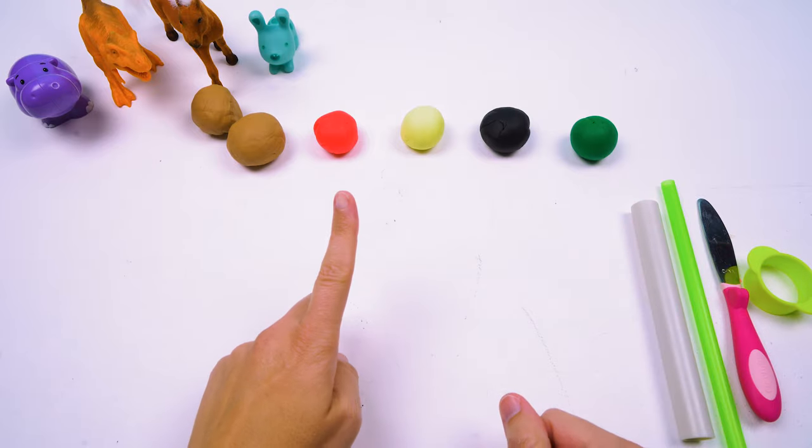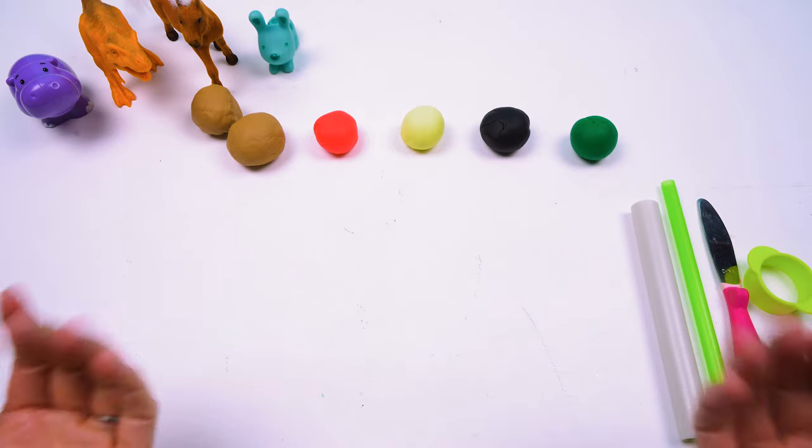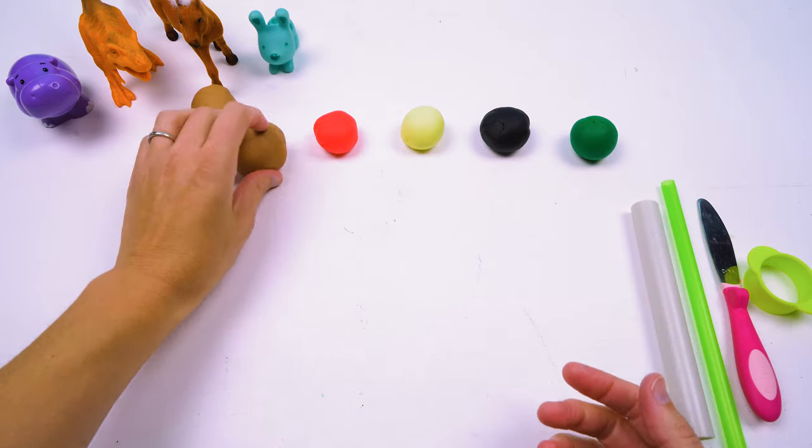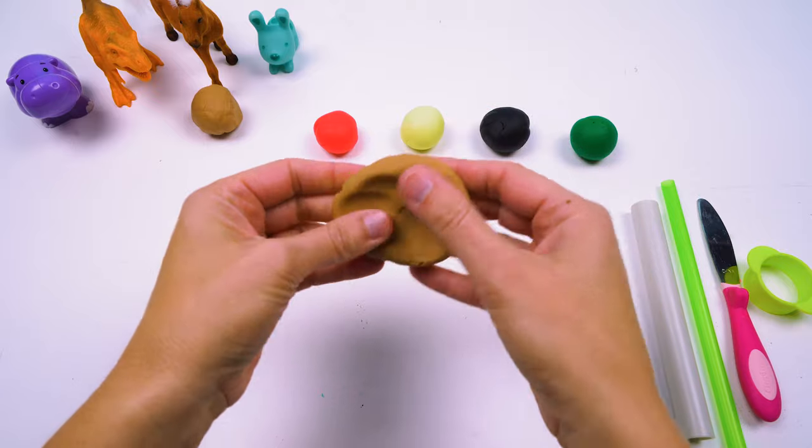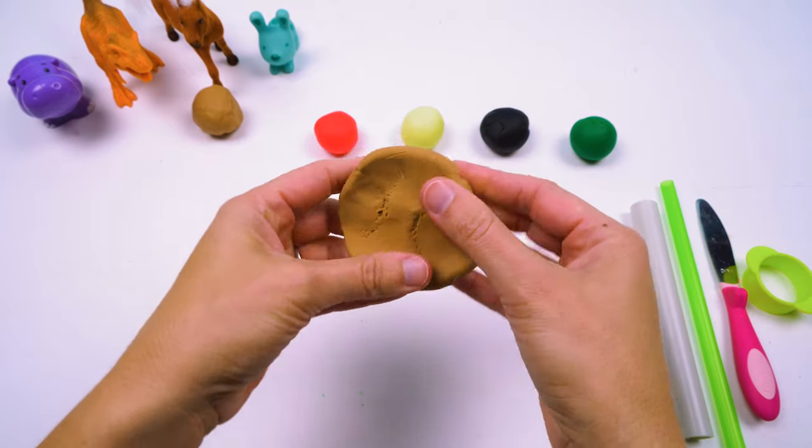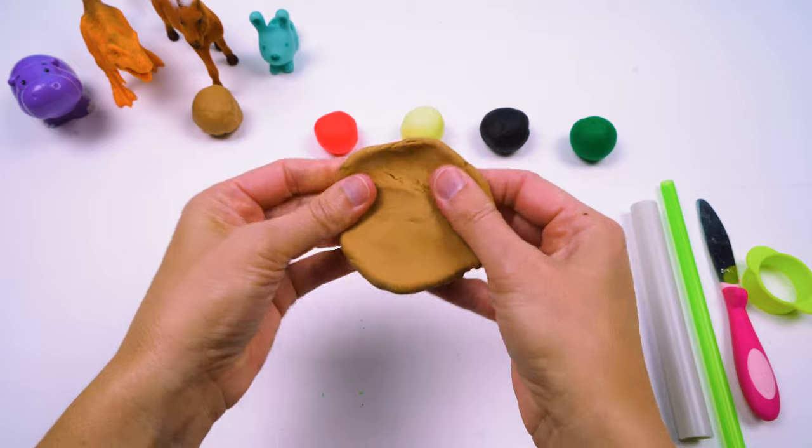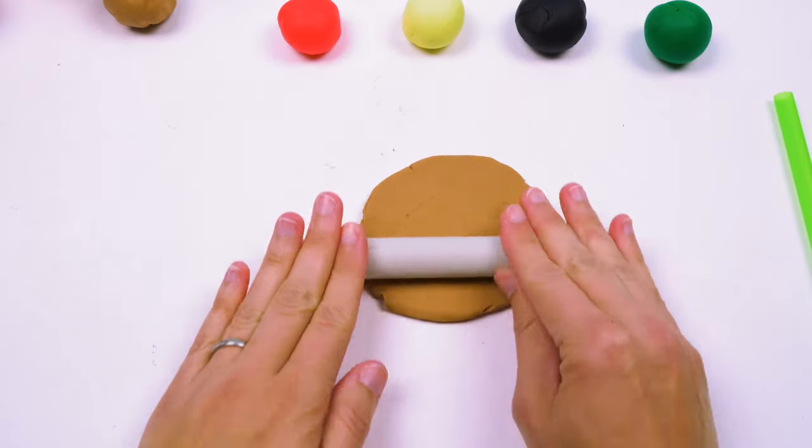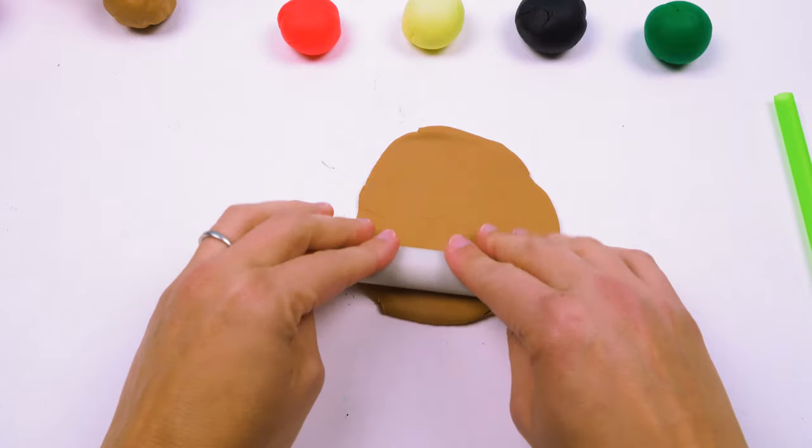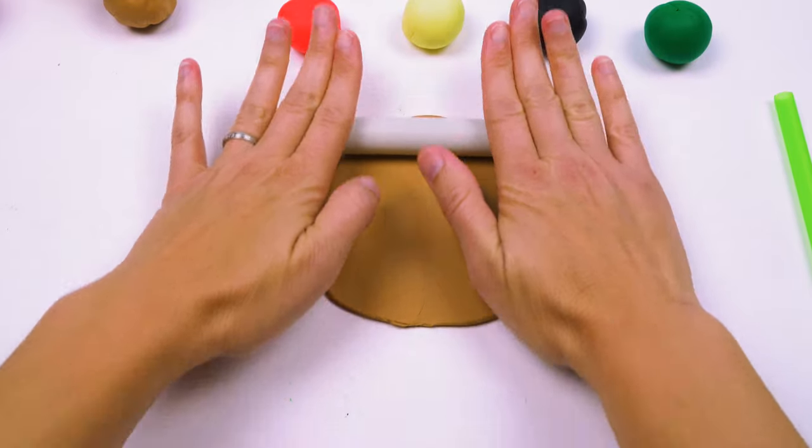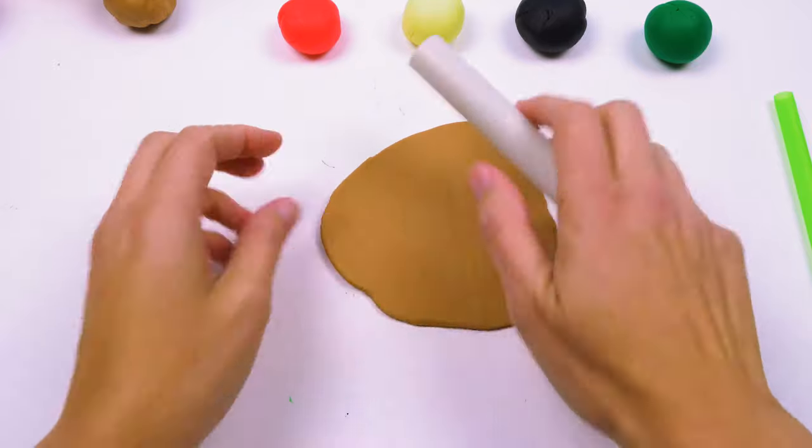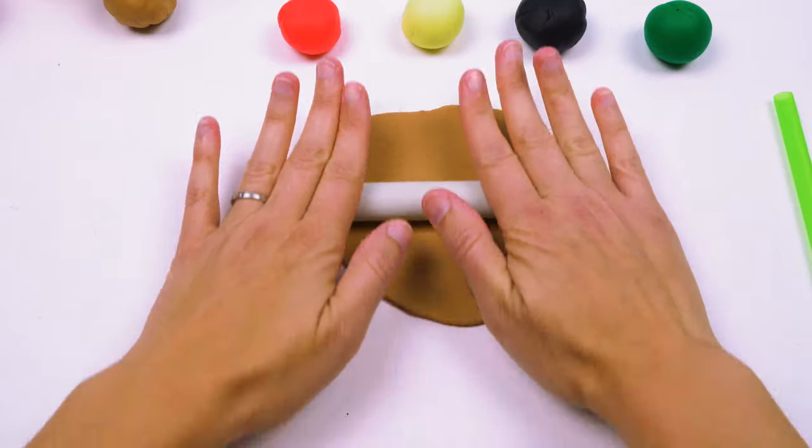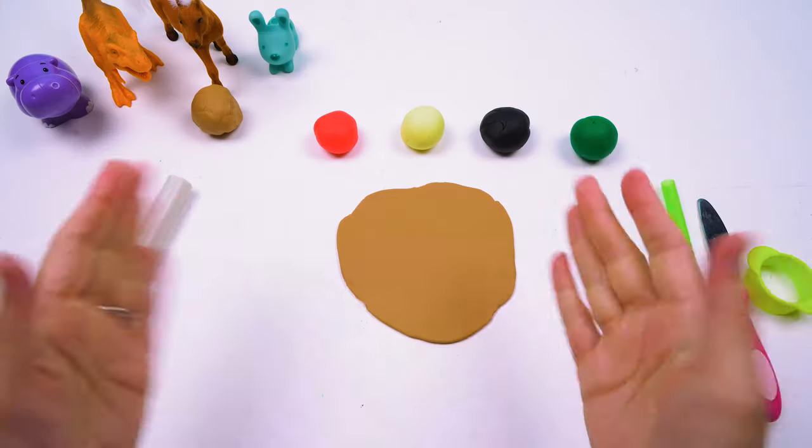All right friends, what is the first thing we need to make for pizza? Yeah, we need to make the crust. And you make pizza crust by making pizza dough.